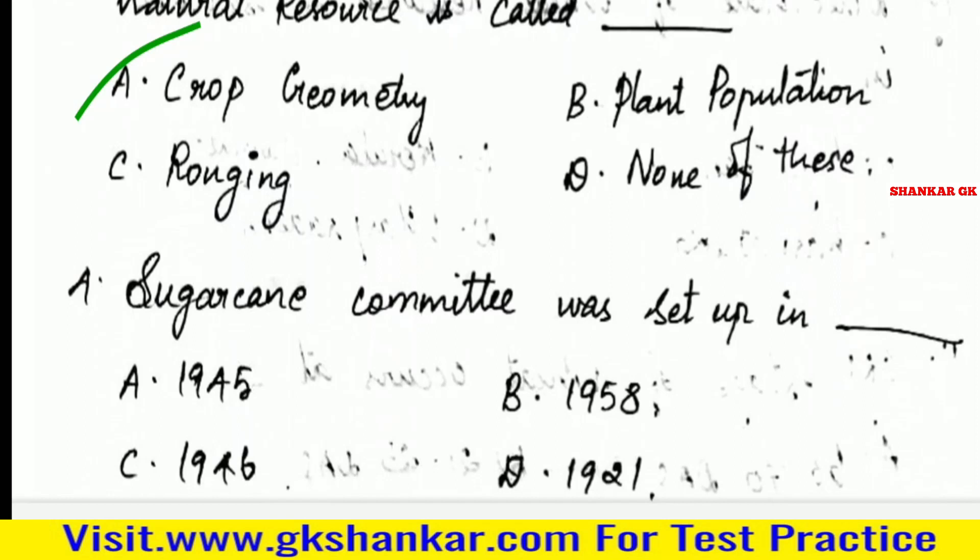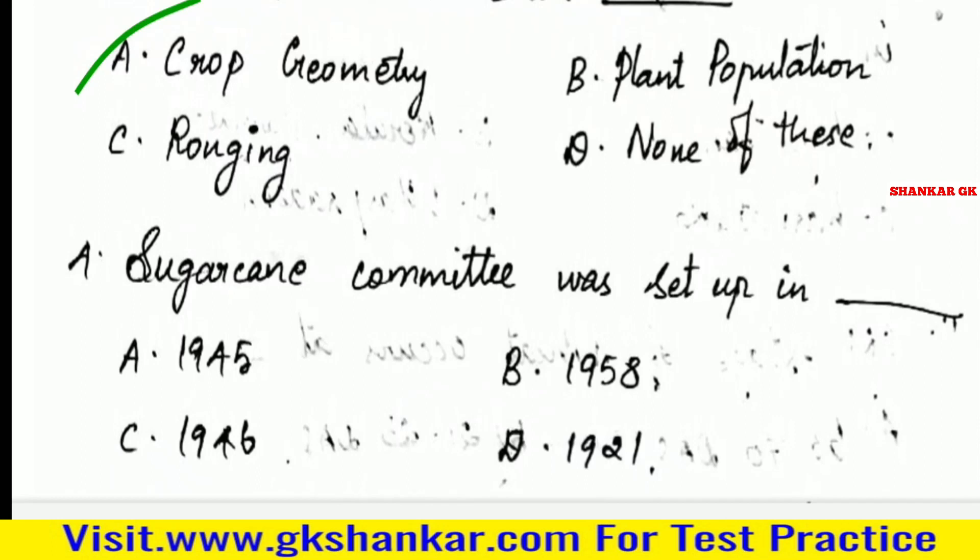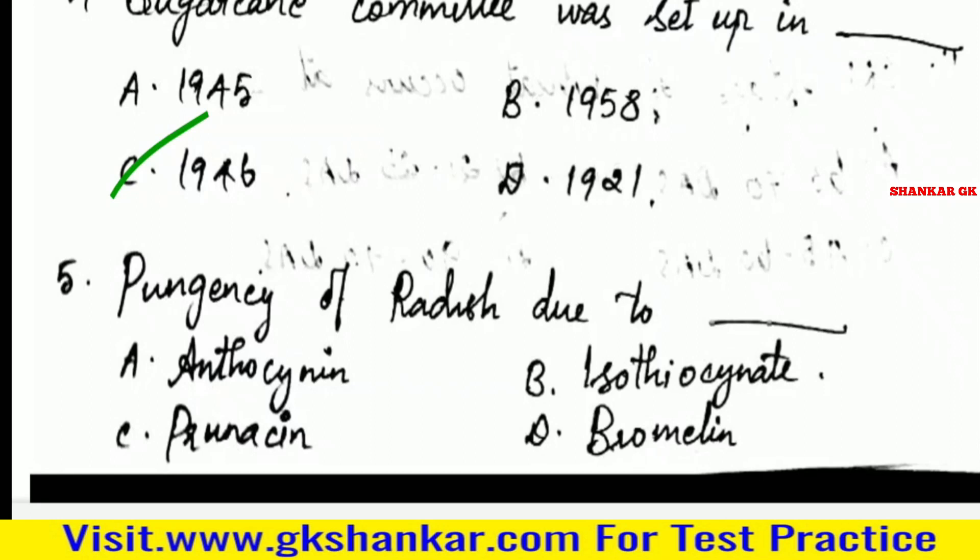Fourth question: Sugar Cane Committee was set up in — A. 1945, B. 1958, C. 1946, D. 1921. Answer: C. 1946.